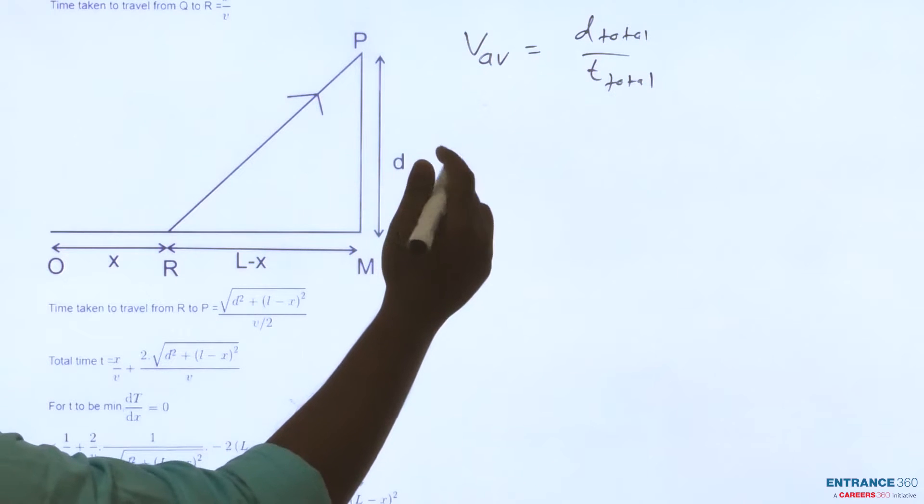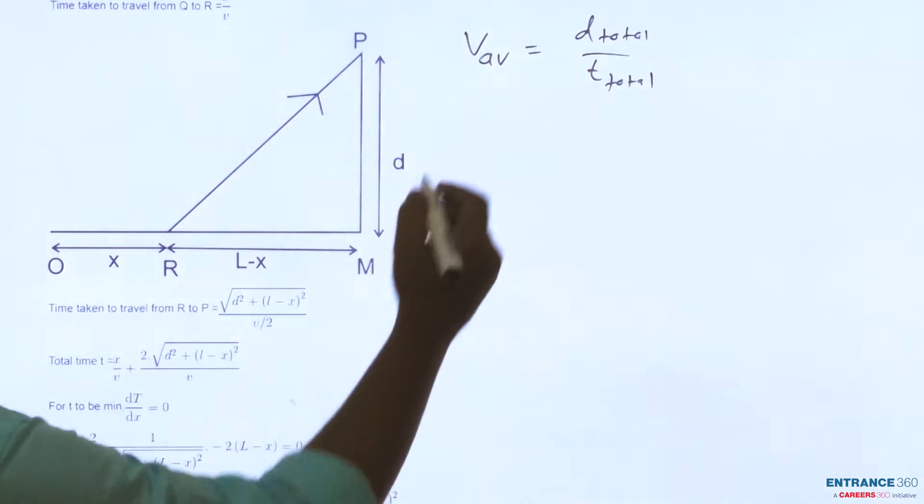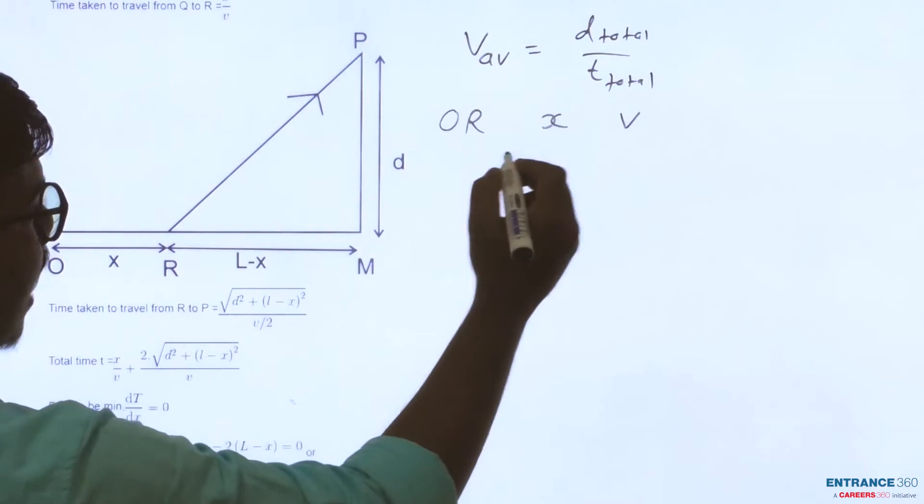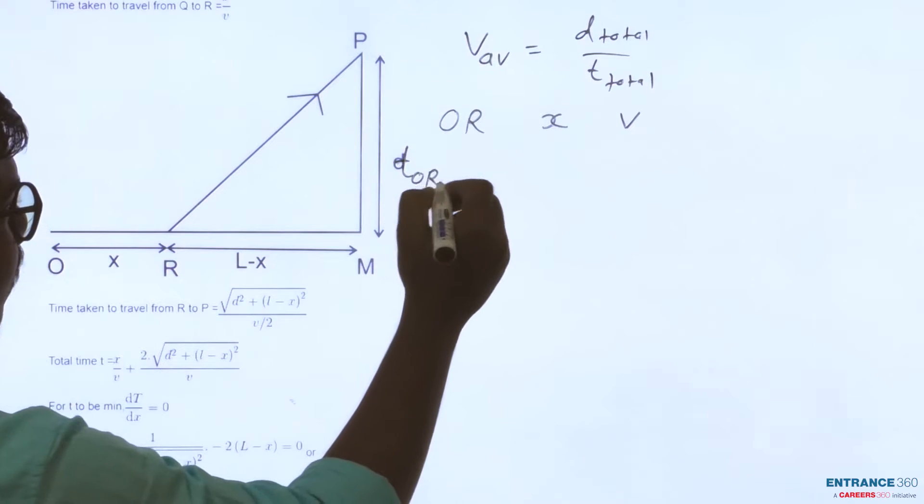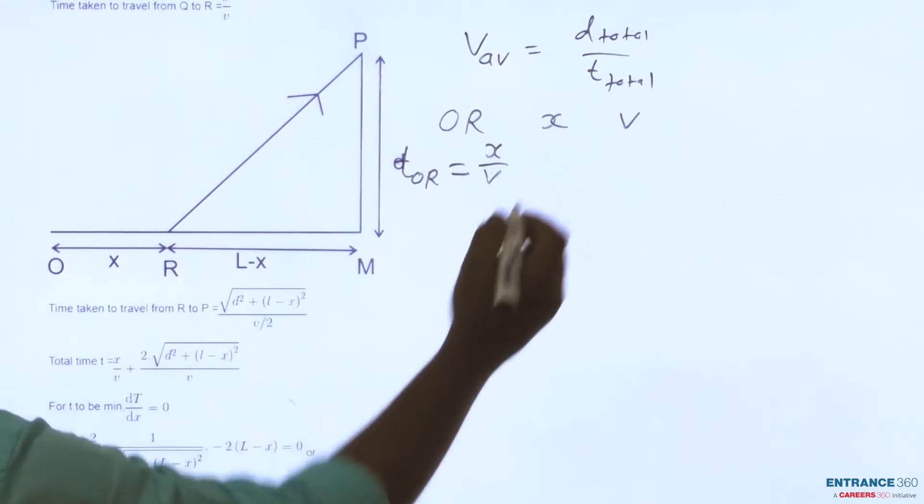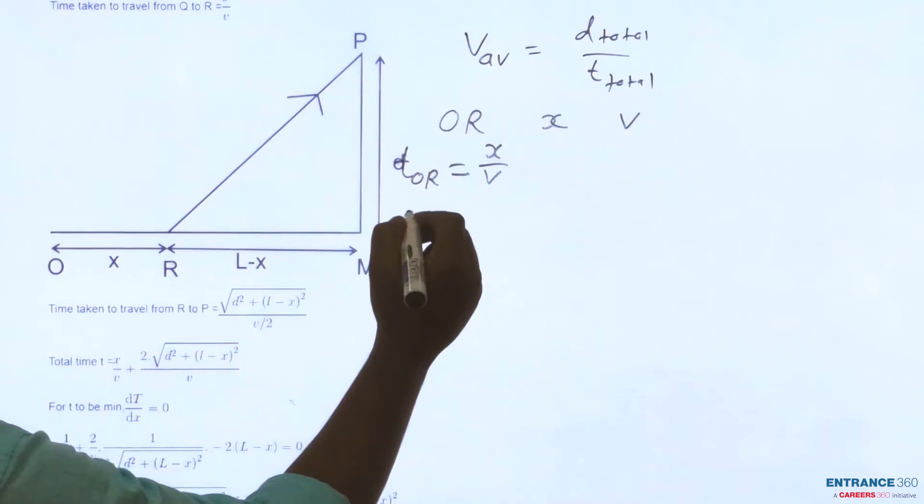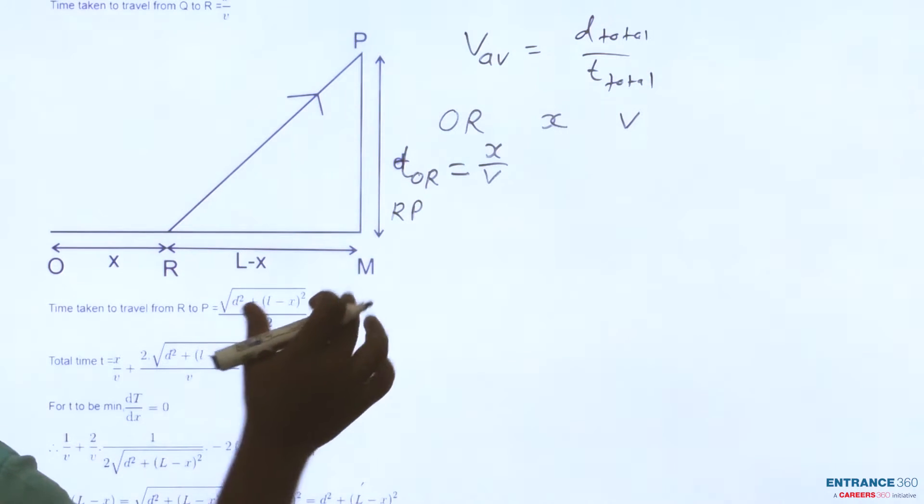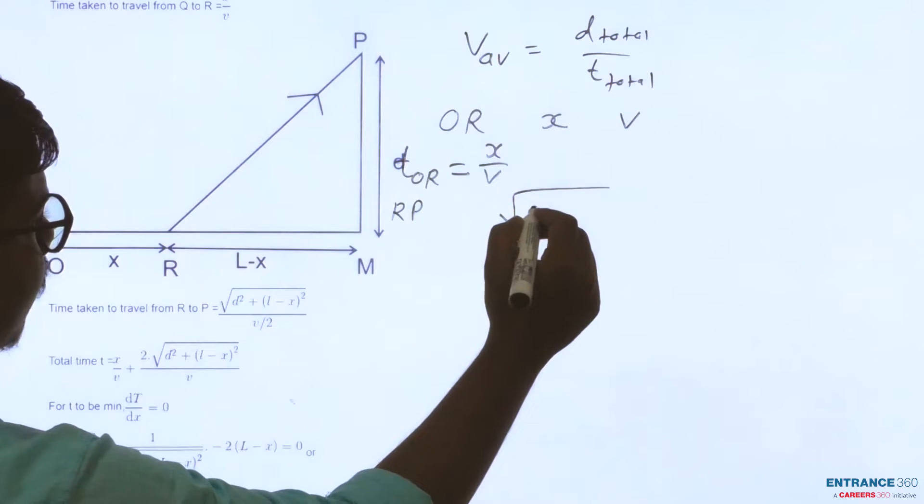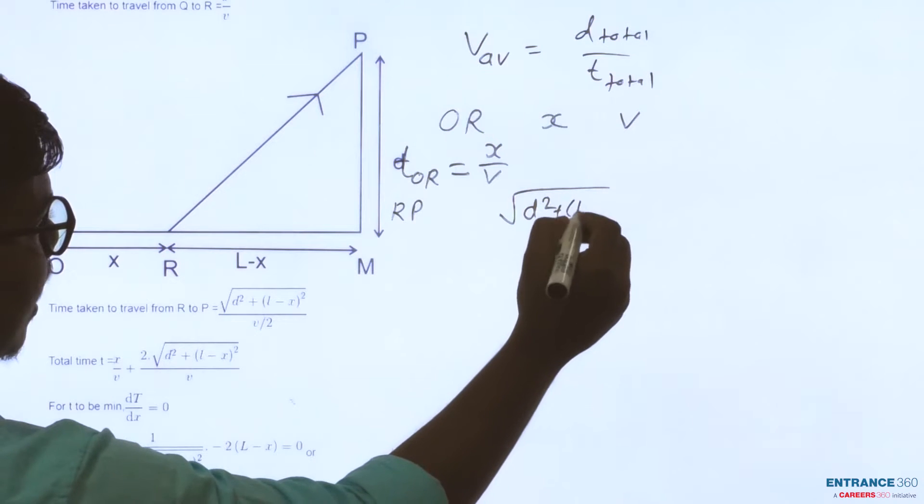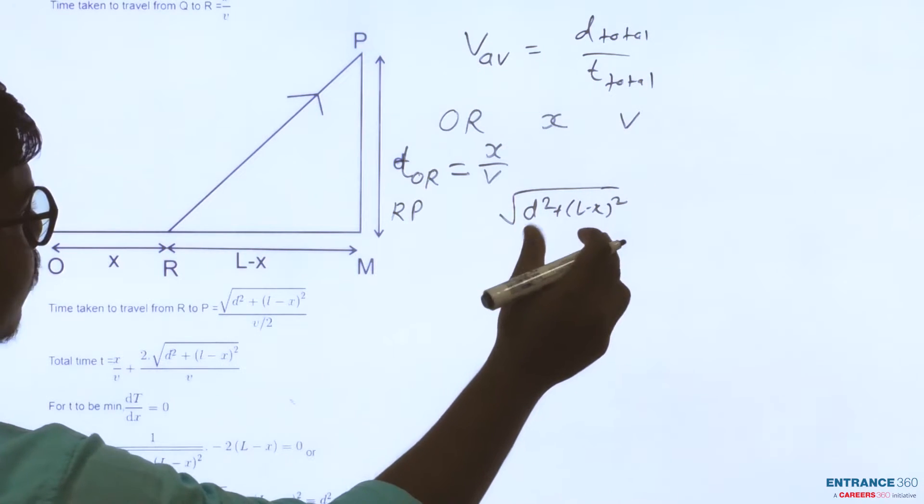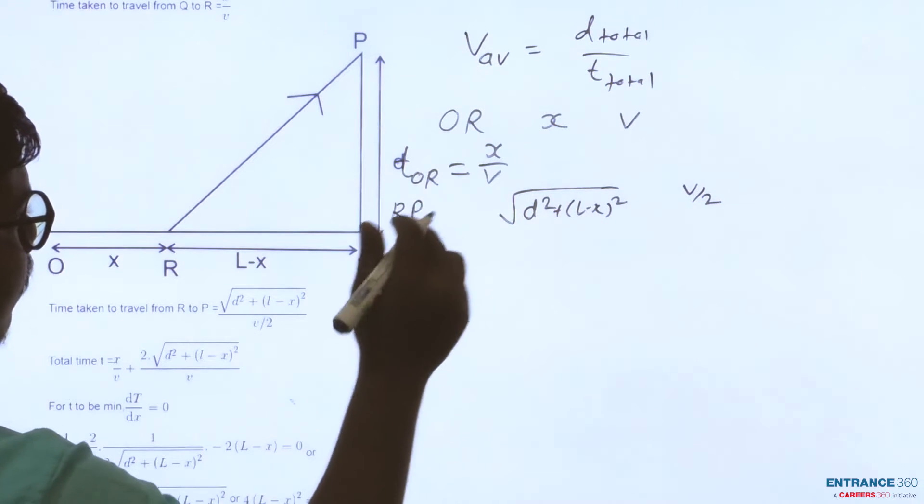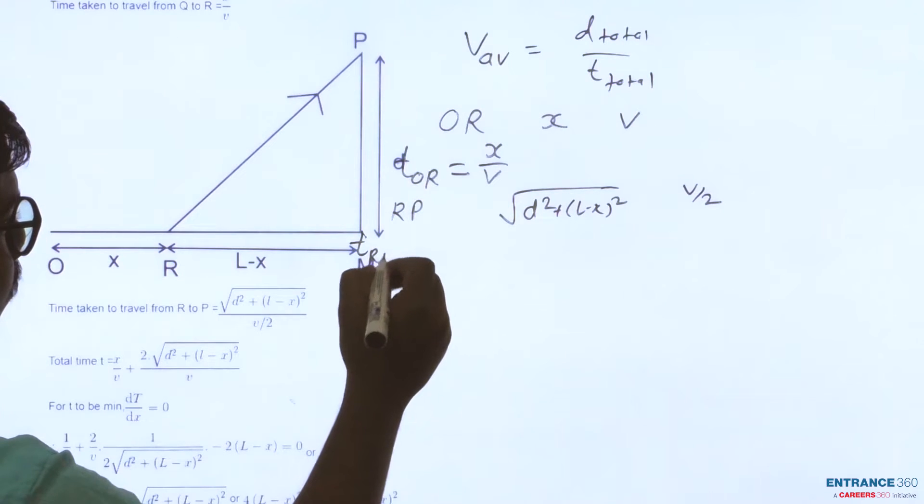Point P is at distance D from point M. For path QR the distance is X and its speed is V, so time taken for QR path is simply X/V. Similarly for the path RP, the distance can be calculated using Pythagoras theorem: √(D² + (L-X)²). The speed for this path is V/2, so the time taken for path RP is 2/V times this distance.